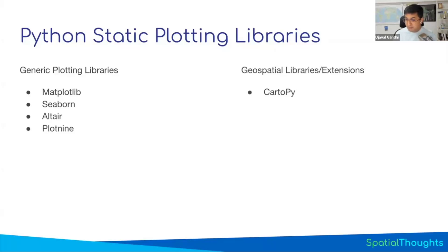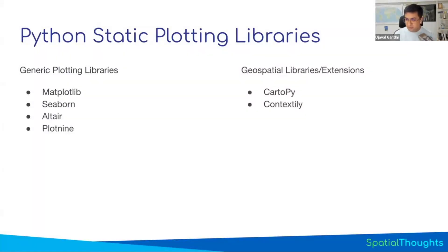Cartopy allows you to work with different projections and create maps in different kinds of projections. If you want a globe, it's much harder to do with matplotlib alone — Cartopy lets you specify a projection and creates a globe for you with data rendered on top. Contextily is a library that allows you to add basemaps. When you open a desktop GIS and add data, you sometimes don't know where you are — Contextily lets you add a basemap like OpenStreetMap or Google basemap by pulling in web tiles and rendering them in your plot. We're going to cover matplotlib, Cartopy, and Contextily during our course.